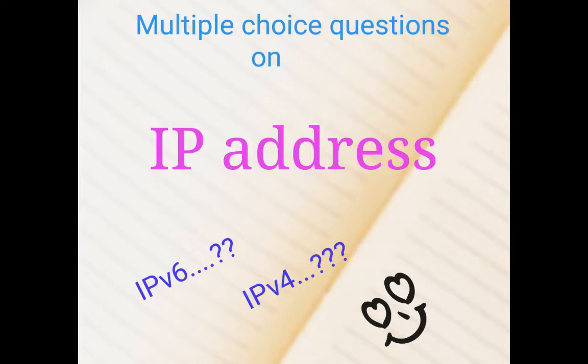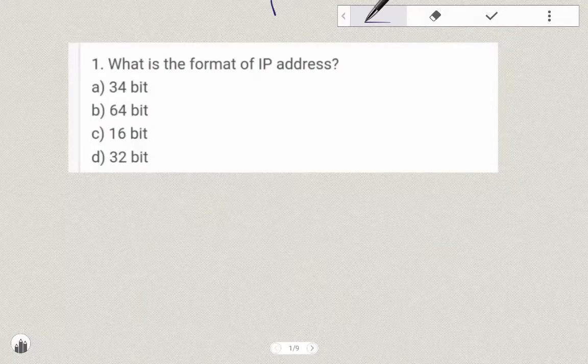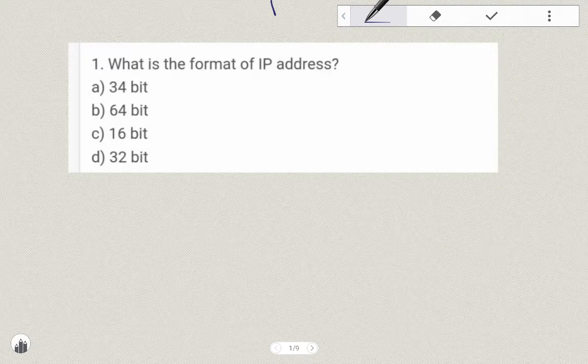We are going to start with the IP Address. The first question is: what is the format of IP Address? Options are: 34-bit, 64-bit, 16-bit, or 32-bit.